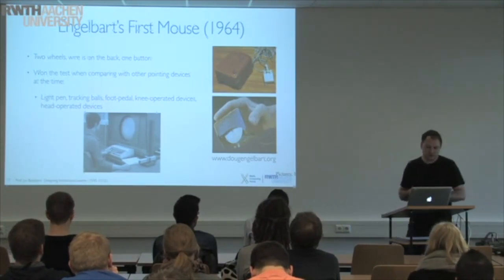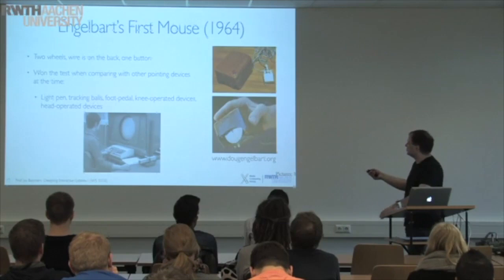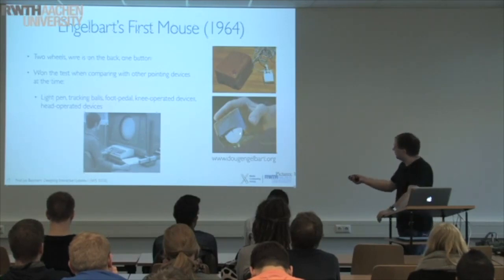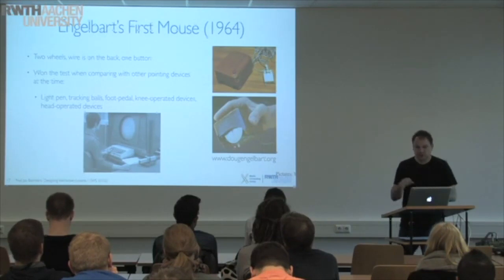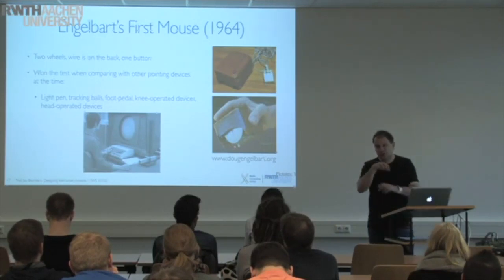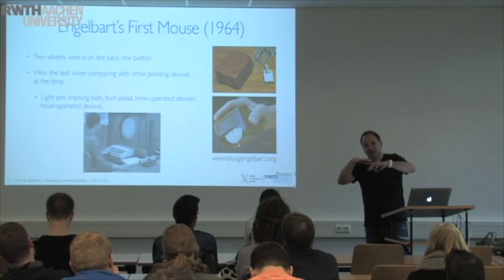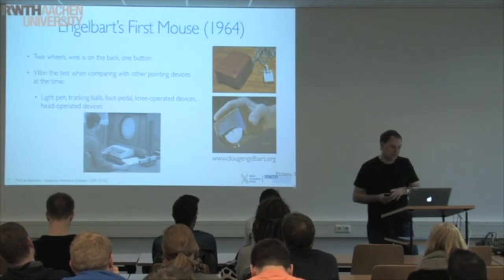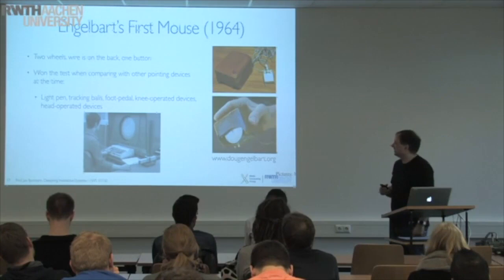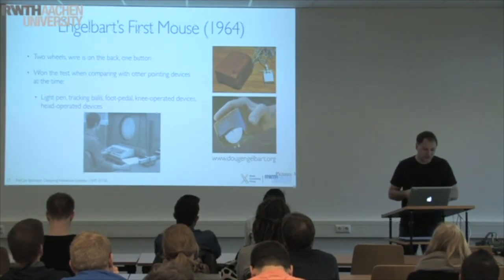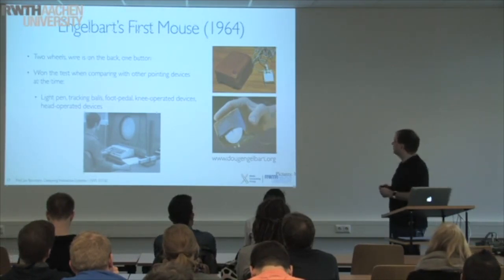The design of the mouse is also interesting. It actually had two metal wheels — one going one way and the other going the other way. When you rolled it one way, one wheel would be turning while the other would be scraping across. When you pulled it diagonally, both would semi-scrape and semi-roll. So not a perfect design — the later ball design was much, much better, of course. But it was definitely an interesting design.